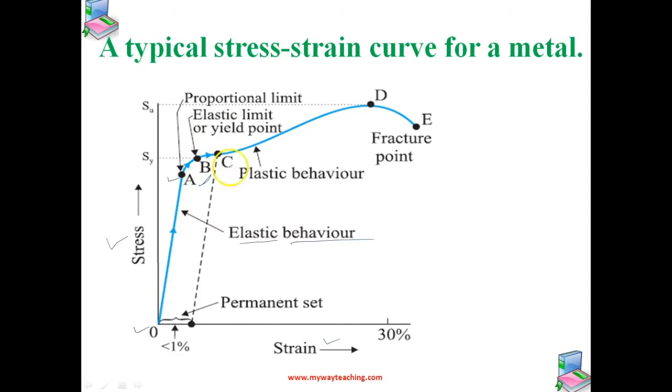If the load is increased further beyond the yield strength, strain increases rapidly even for small changes in stress. The portion between B and D shows this. When the load is removed in this region, the body does not regain its original dimension. Even when stress is zero, strain is not zero. The material has a permanent deformation or permanent set, called plastic deformation.